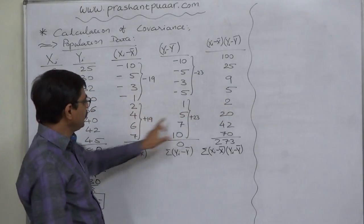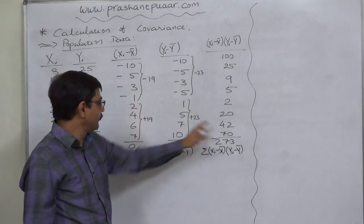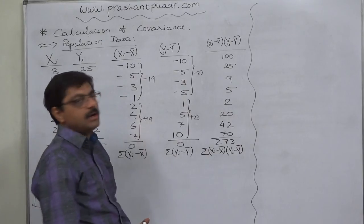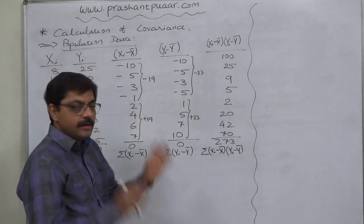2 into 1, 2, 4 into 5, 20, 6 into 7, 42 and 7 into 10, 70. Ultimately, we get the total 273.